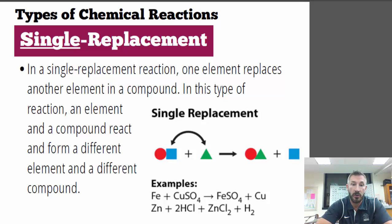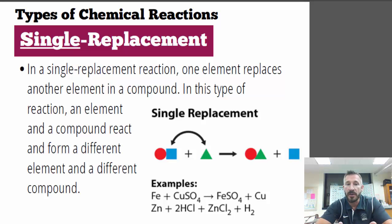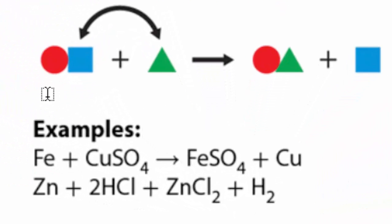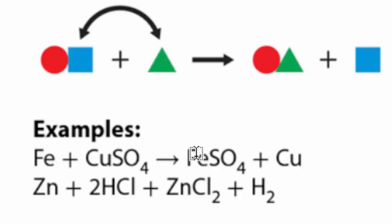In a single replacement reaction, one element replaces an element in a compound. Visually, you see a compound and a single element — the triangle replaces a square — so an element replaces an element. An example: if you add iron and copper sulfate, the products are iron sulfate and copper. The iron displaced or replaced the copper, and now the copper is by itself.